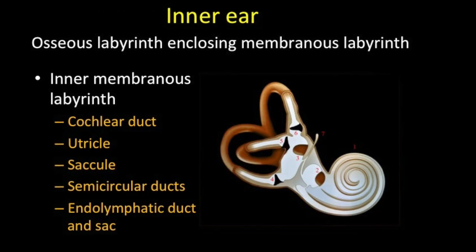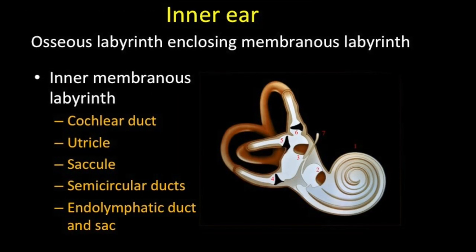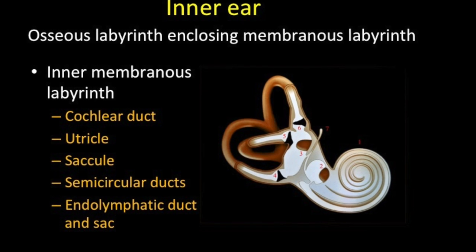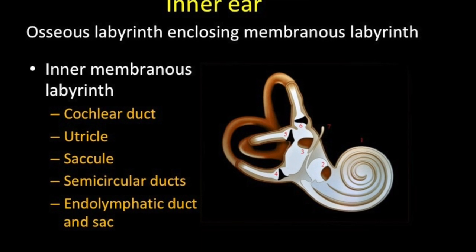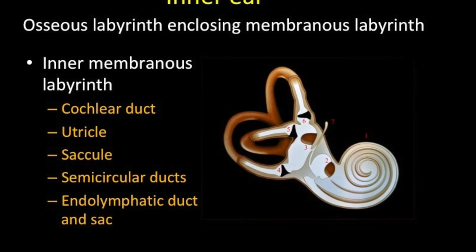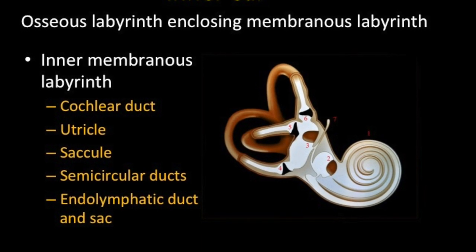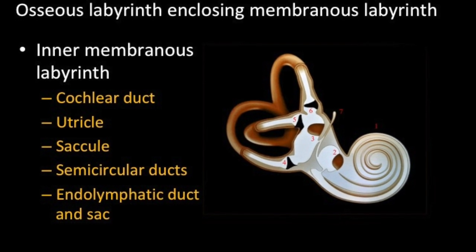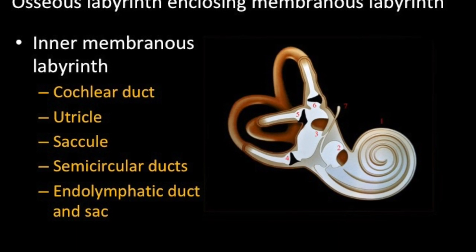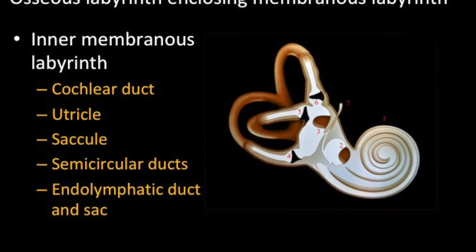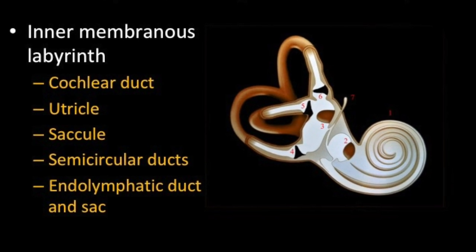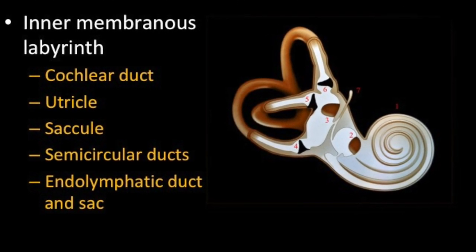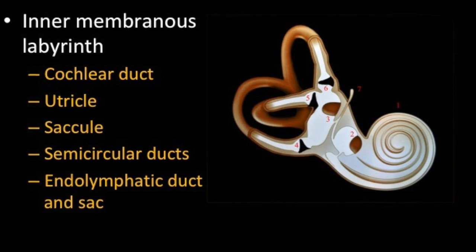Within the osseous labyrinth lie the components of the membranous labyrinth: the cochlear duct lies within the cochlea; the utricle and saccule lie within the vestibule; the semicircular ducts lie within the semicircular canals; and the endolymphatic duct and sac lie within the vestibular aqueduct.